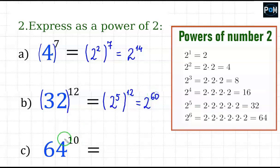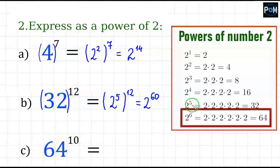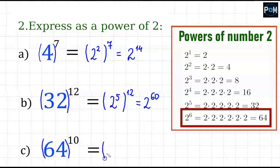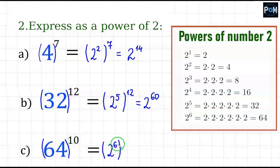In example C, it will be no different. Looking at the number 64, we check the table — 64 is 2 to the power of 6. So I replace the number 64 with 2 to the power of 6, and then copy the exponent 10. From this, multiplying 6 and 10, it turns out to be 2 to the 60th power.